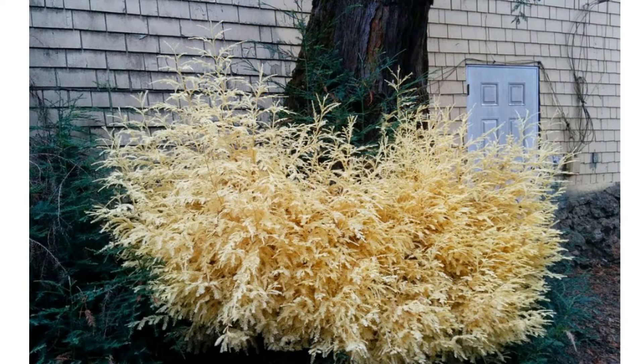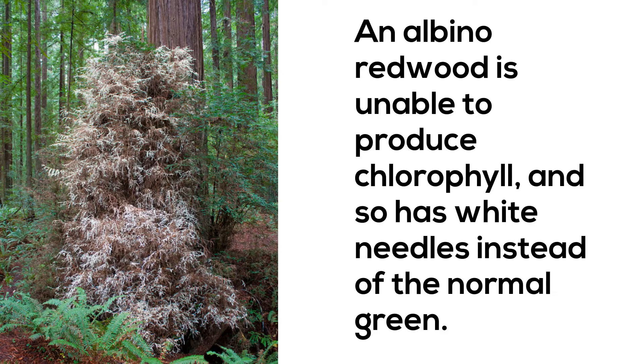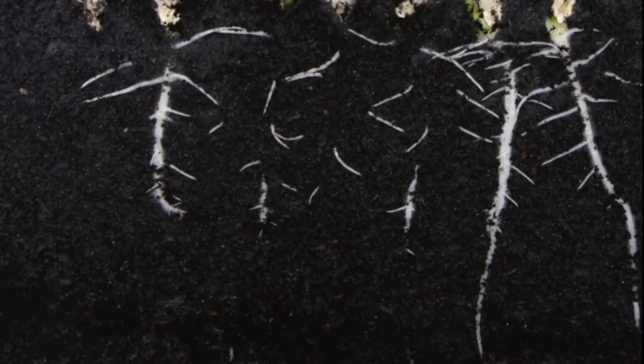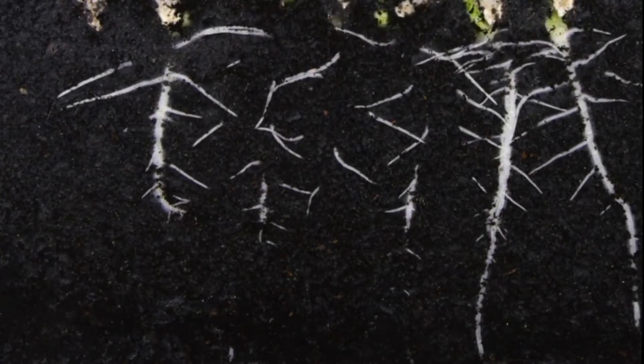This next tree is an albino redwood. An albino redwood is a redwood tree that is unable to produce chlorophyll, so it has white needles instead of the normal green. It survives by obtaining sugar and other nutrients from connections with its roots and those of the neighboring normal redwoods around it.